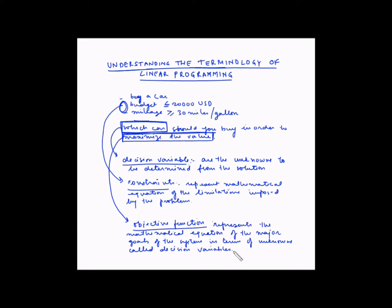To understand the objective function more concretely: suppose our decision variables are x and y, then the objective function could be P (profit) = 5x + 6y. The objective function is expressed in terms of the decision variables x and y. Generally, the objective function in linear programming is of the optimization type — it can be maximizing profit or minimizing cost.